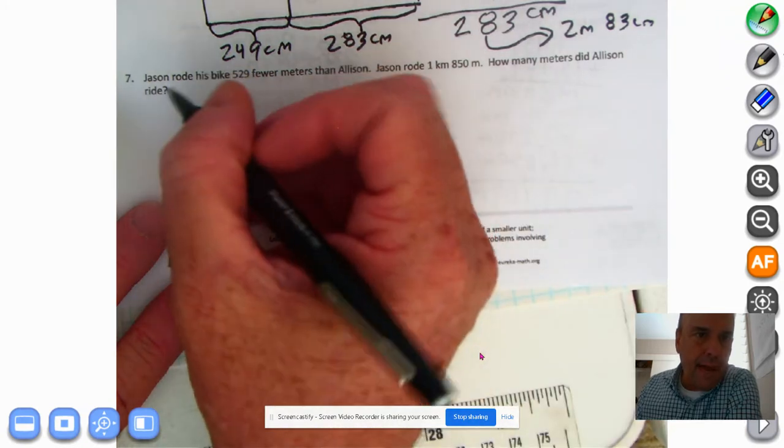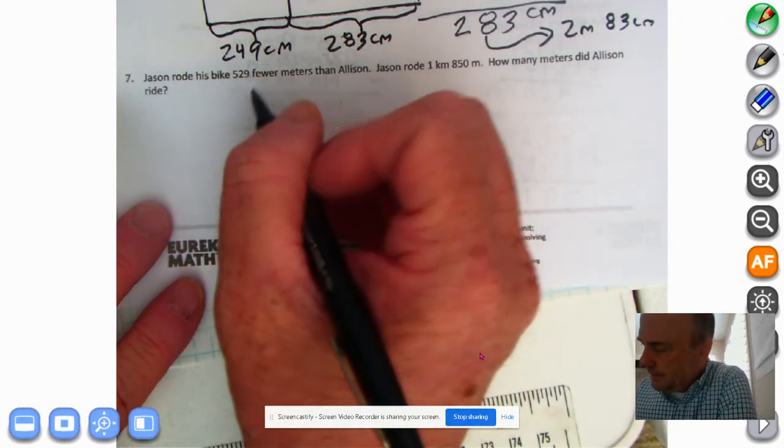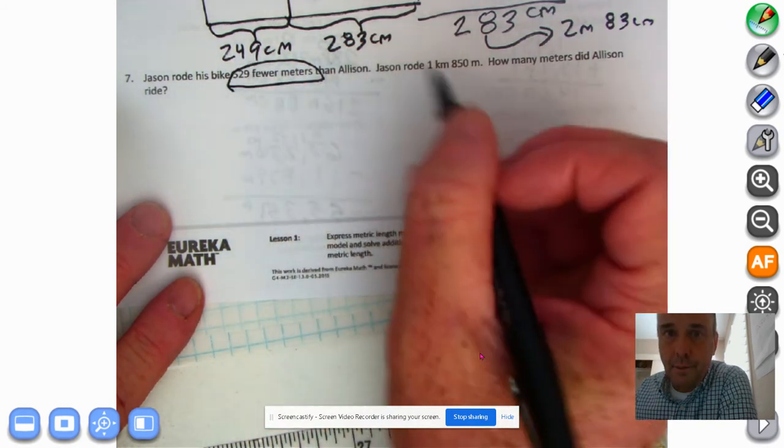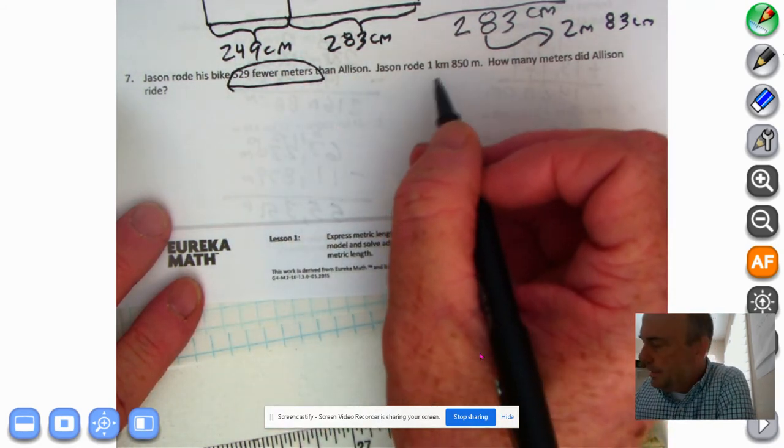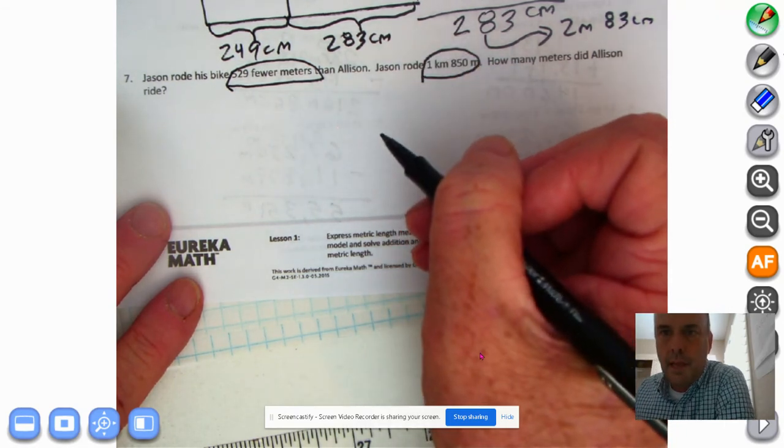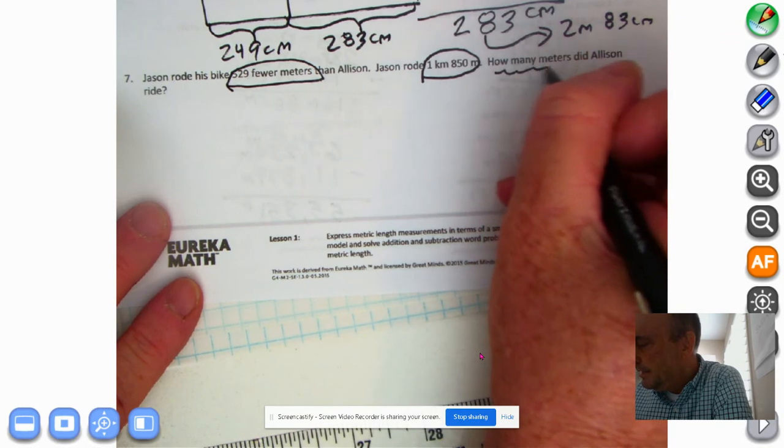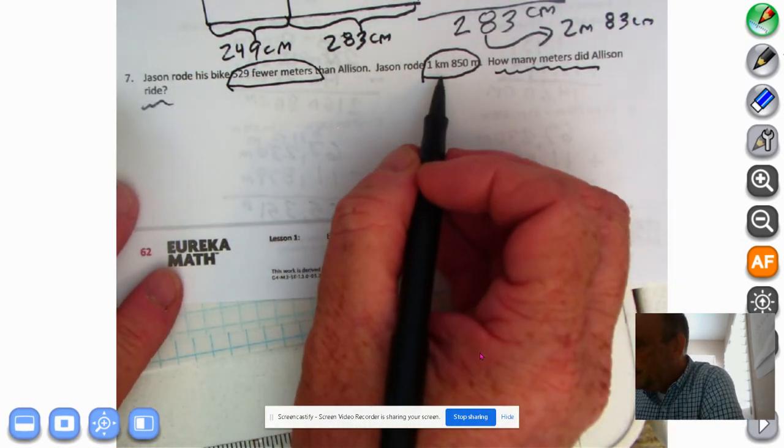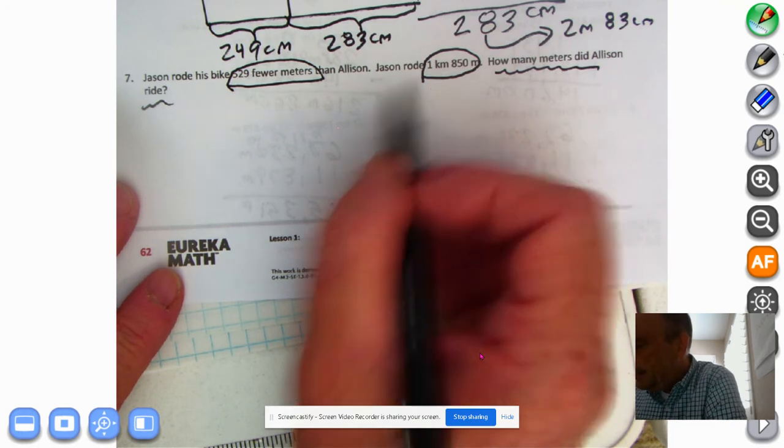Jason rode his bike 529 fewer meters than Allison. Jason rode 1 kilometer, 850 meters. How many meters did Allison ride? So this is what Jason rode. It's a total of 1 kilometer.